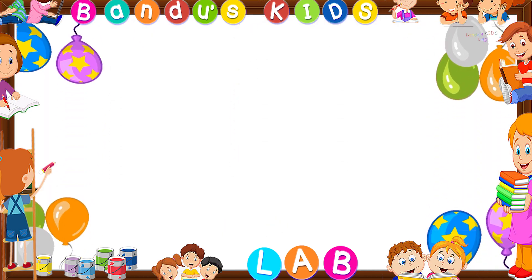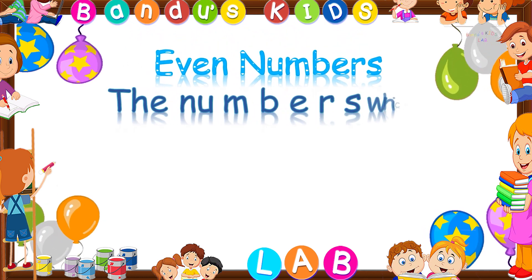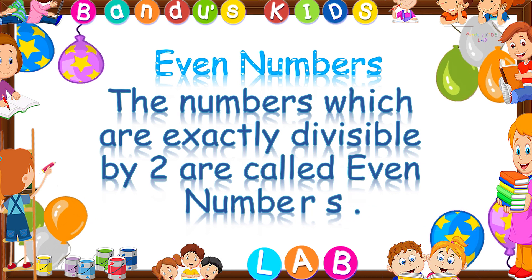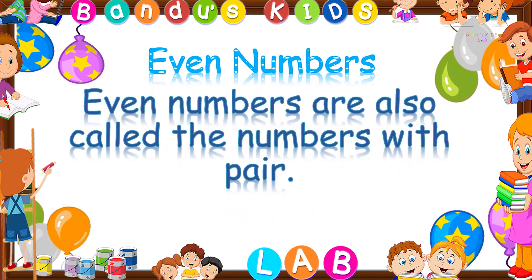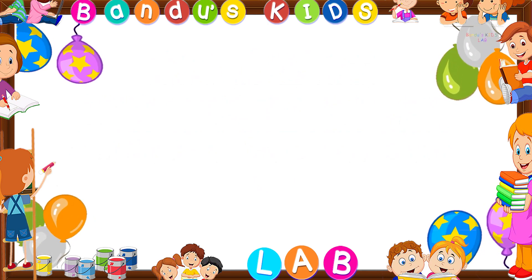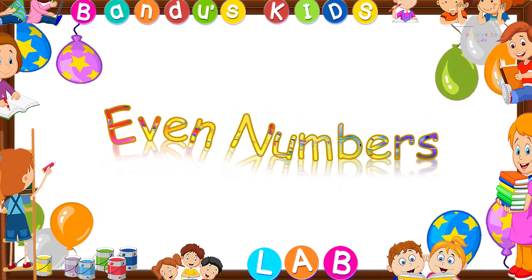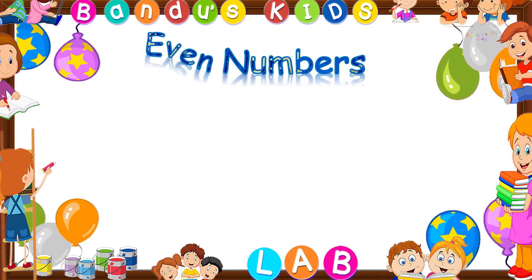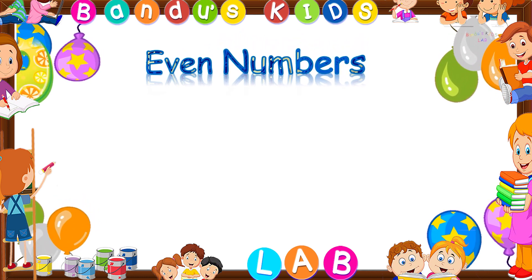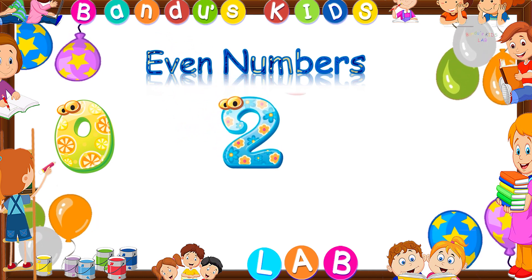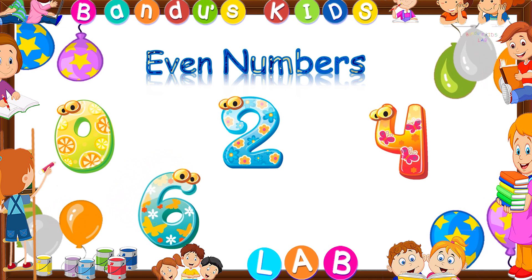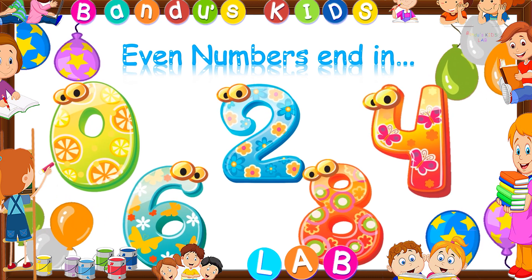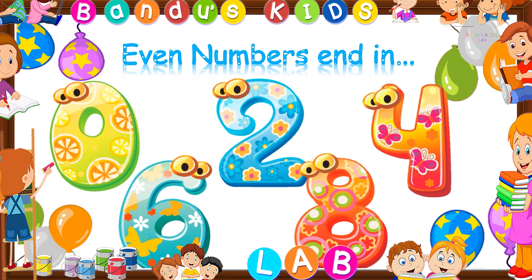Now we are going to learn some even numbers. Even numbers. The numbers which are exactly divisible by 2 are called even numbers. Or even numbers are also called the numbers with pair. Now let's read the even numbers from 0 to 9. Even numbers: 0, 2, 4, 6, and 8. Even numbers are always ended in 0, 2, 4, 6, and 8.